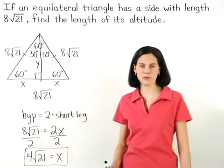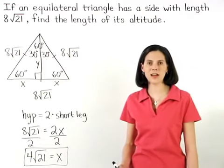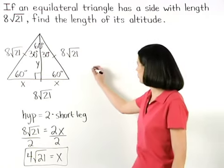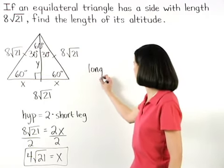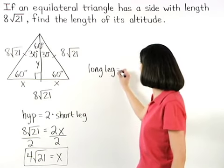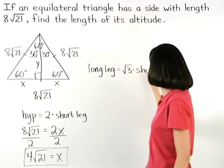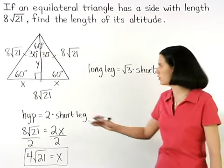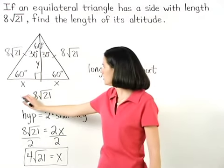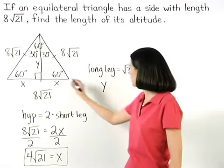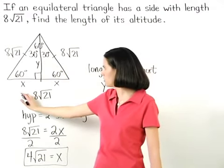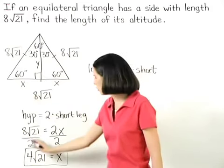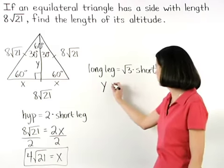To find the value of y, we know that in a 30, 60, 90 degree triangle, the long leg is root 3 times the short leg, which is root 3 times x, or root 3 times 4 root 21.